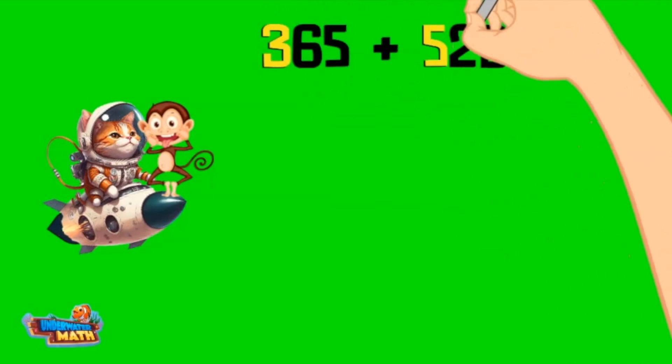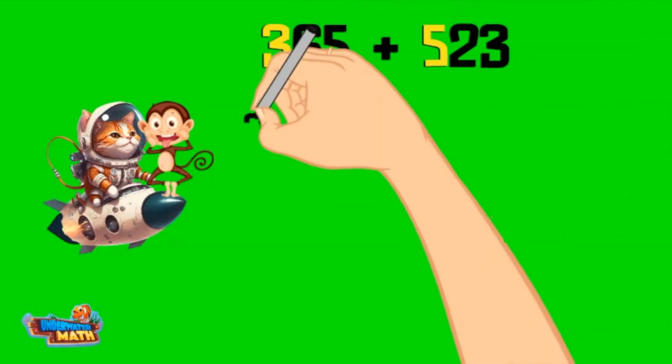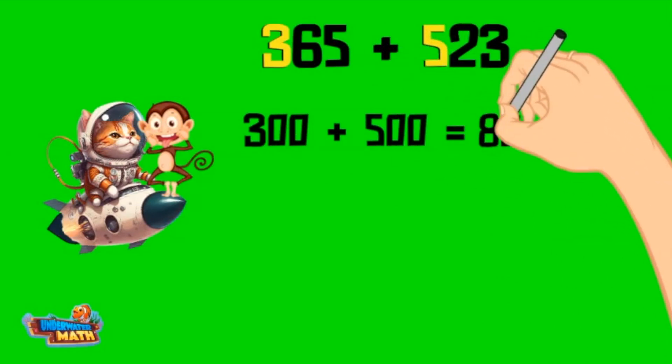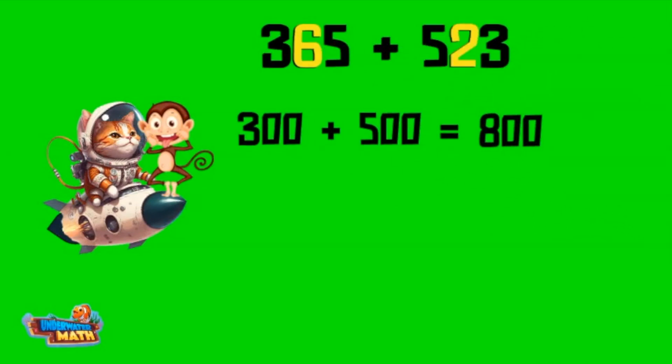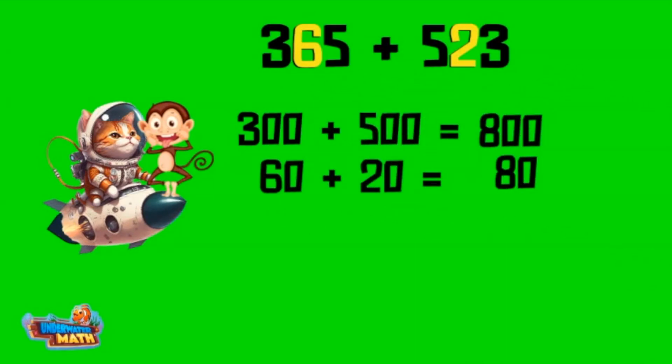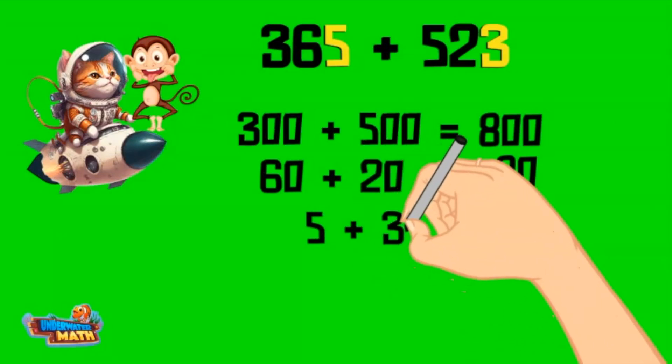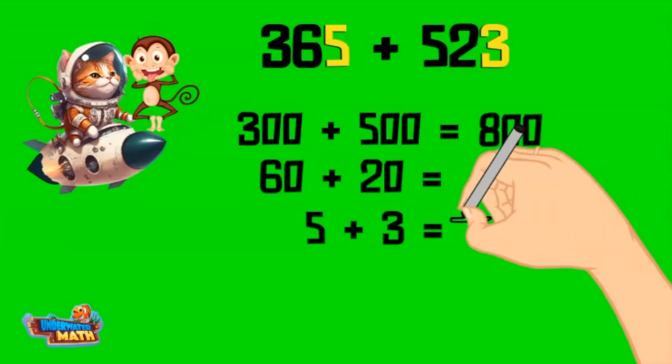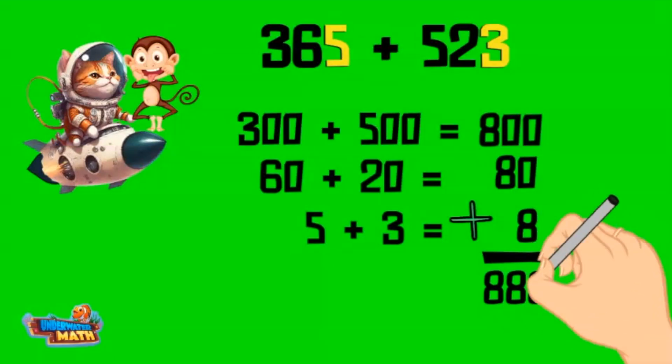On the planet of place value, we add the hundreds place first: 300 plus 500 equals 800. Then we move to the tens place: 60 plus 20 equals 80. Then we add the ones place by adding 5 plus 3 which equals 8. To find the total sum, we add all the sums up for a final total of 888.